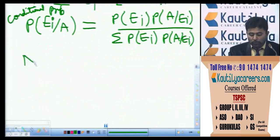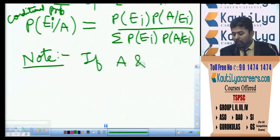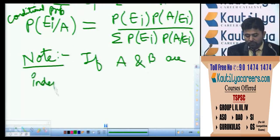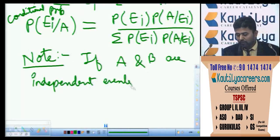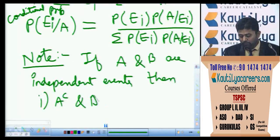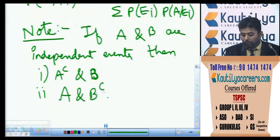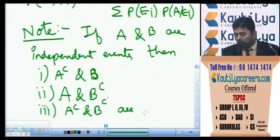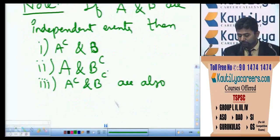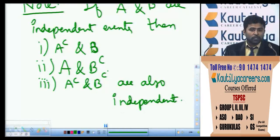A few notes: If A and B are independent events, then A complement and B, A complement and B complement, and A and B complement are also independent.